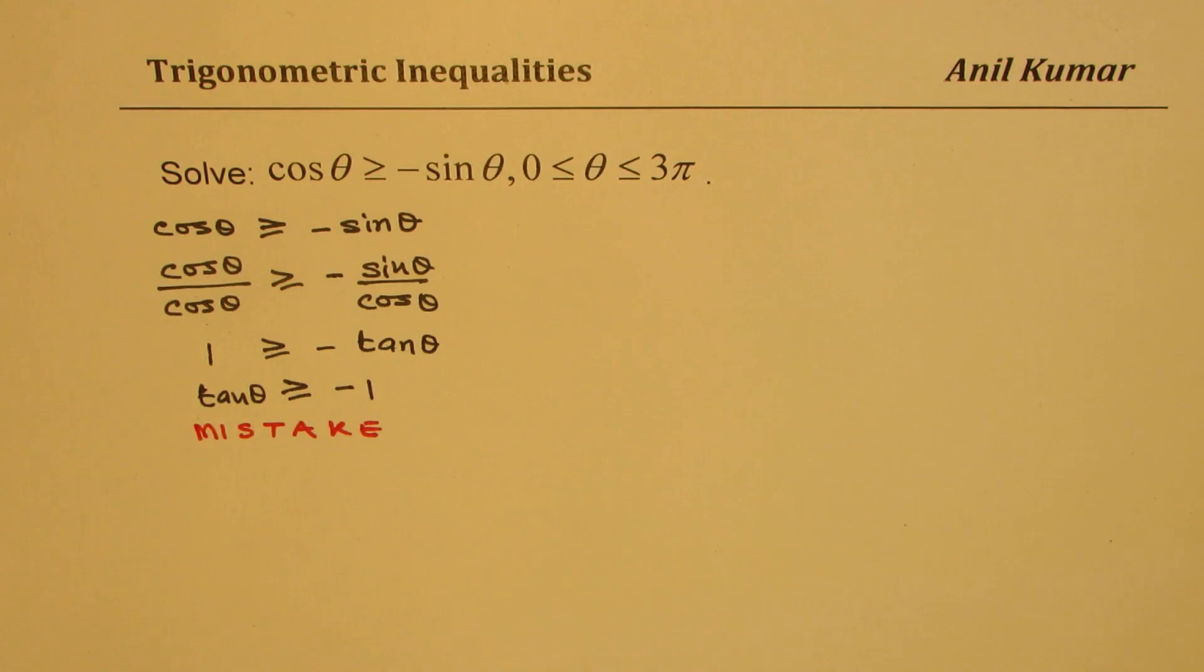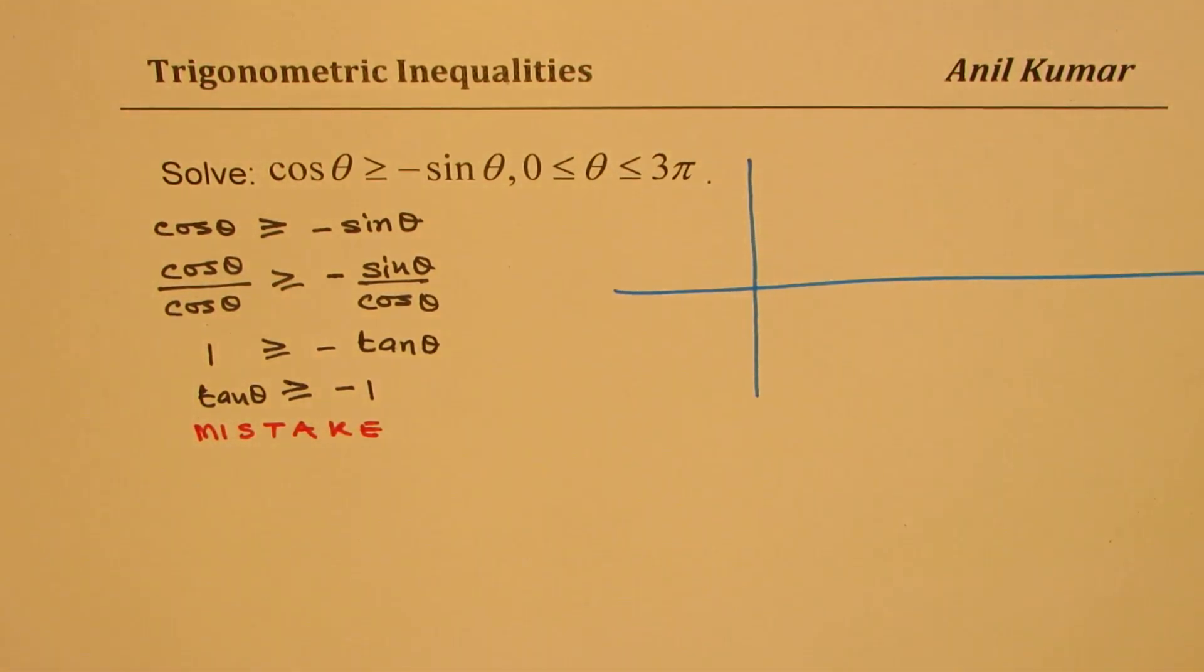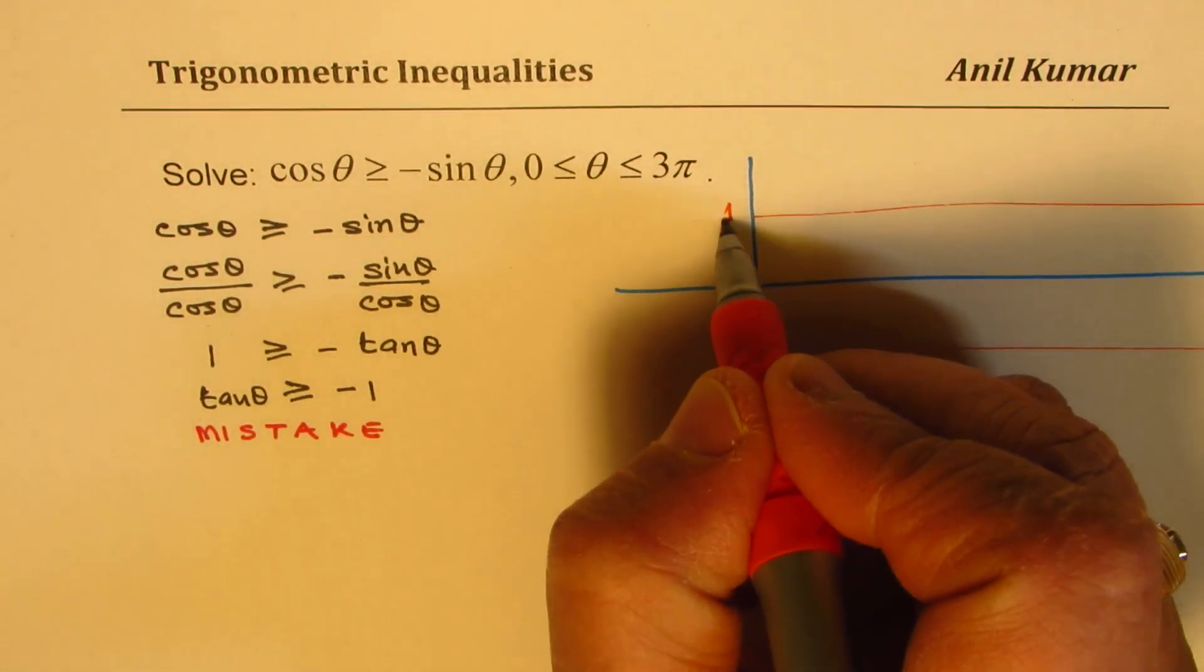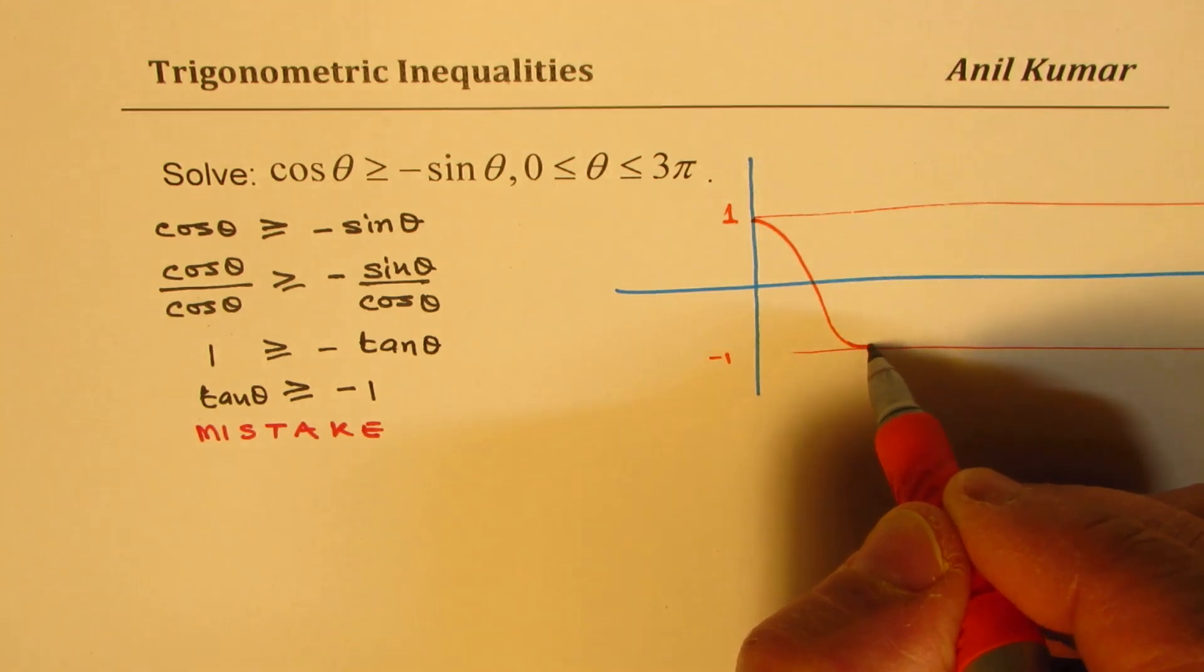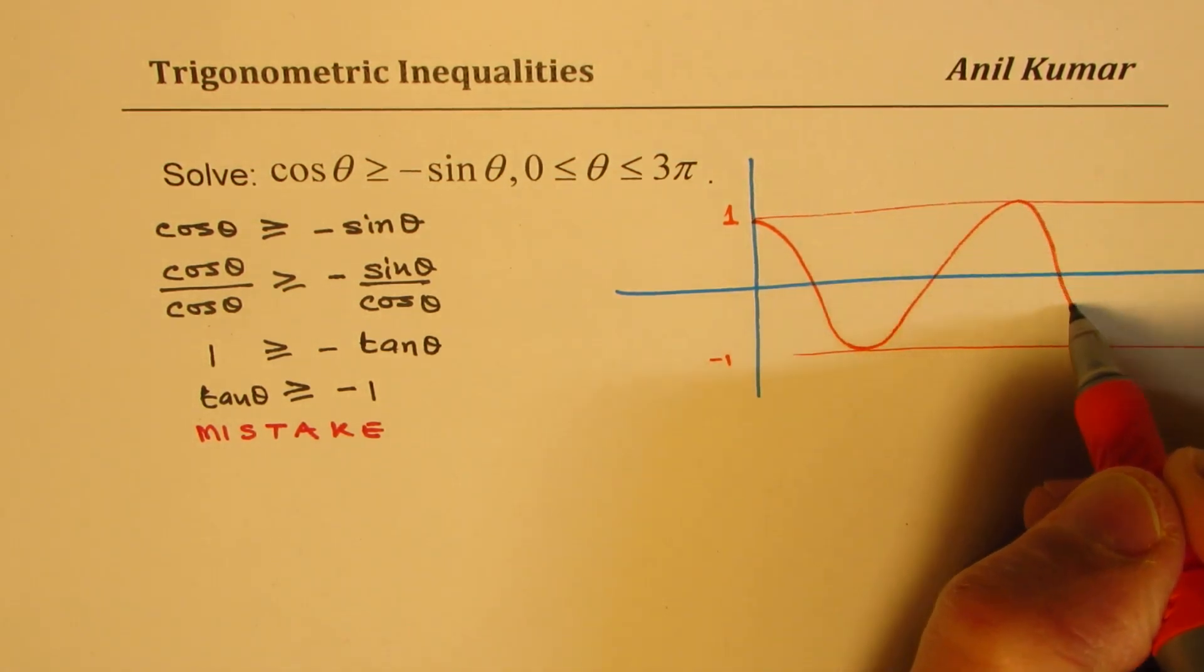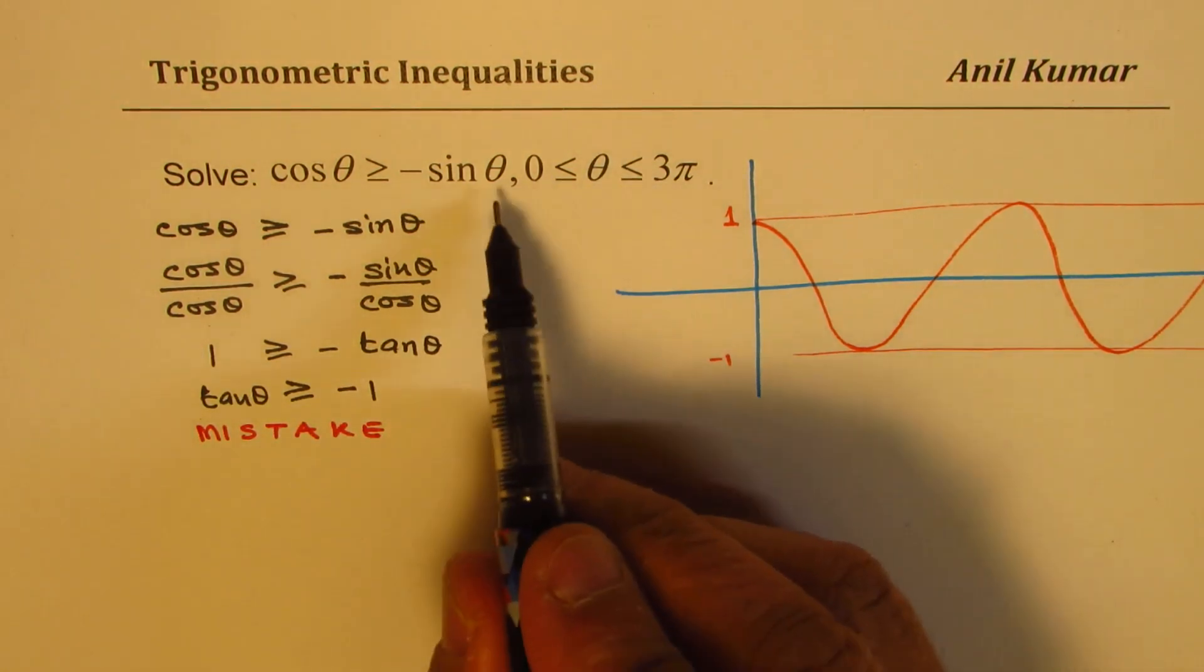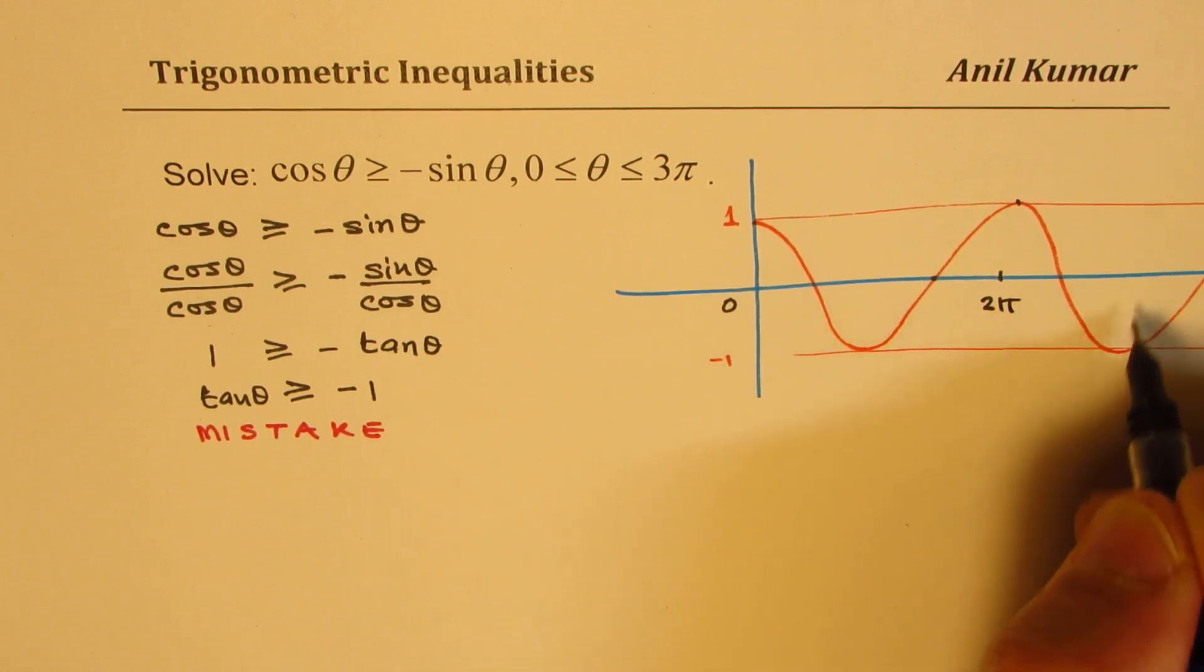On the side, I will provide you with an alternate solution. We can actually graph and find the solution. Let us sketch the graph of cosine function and also -sin x. This is the value which is positive 1 and negative 1. I am sketching cos θ, which starts from the top, goes like this. These are rough sketches. We are interested in 0 to 3π. So this is 0 and that is one full cycle of 2π and that is one more half 3π.